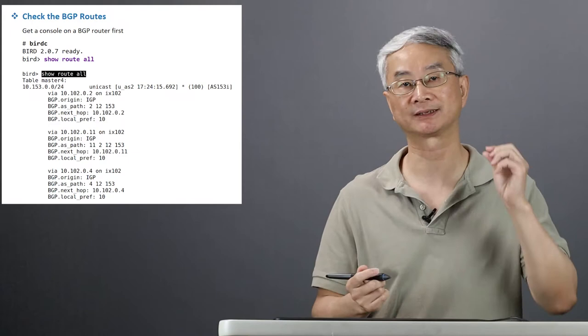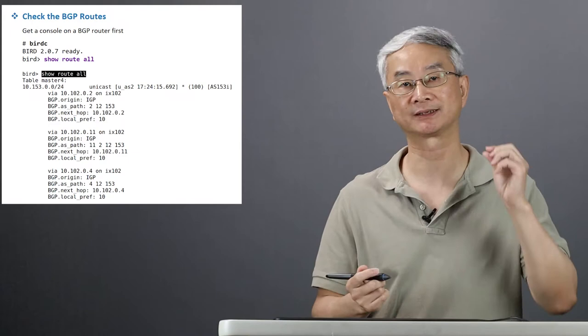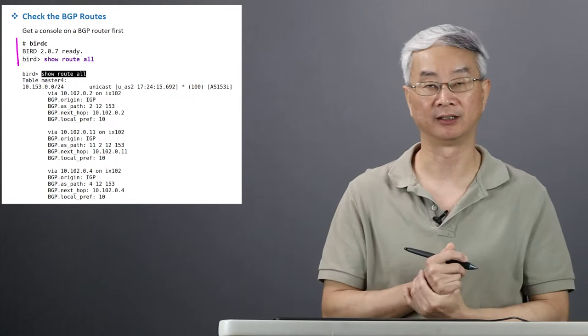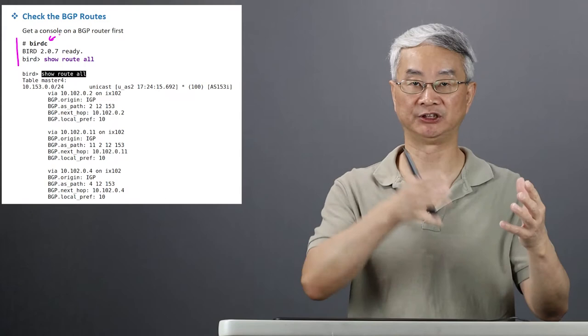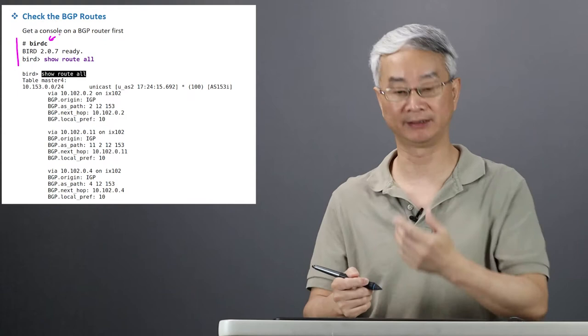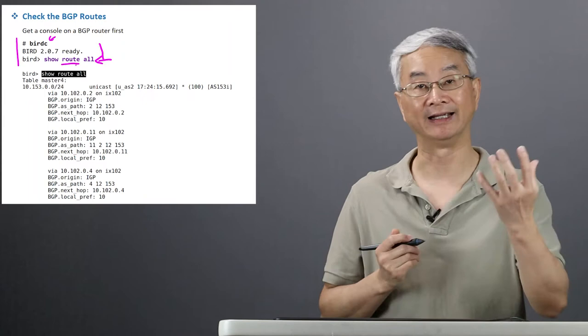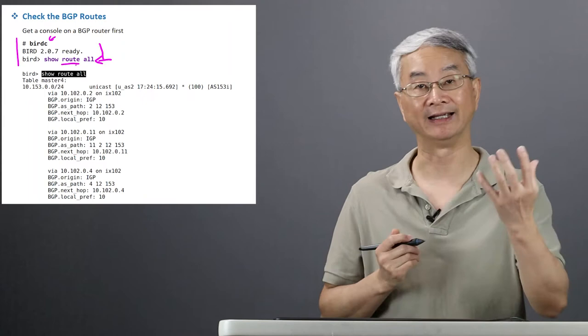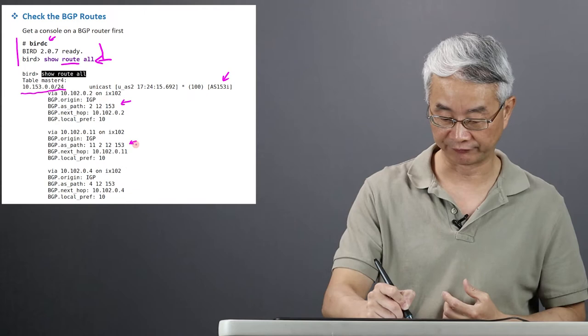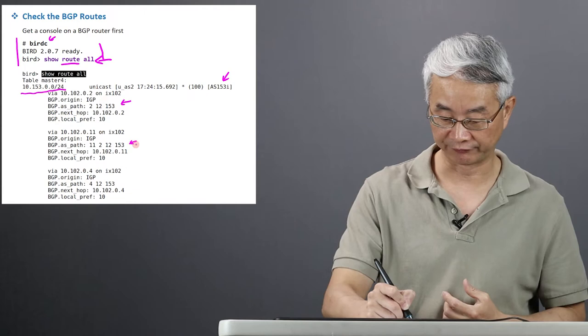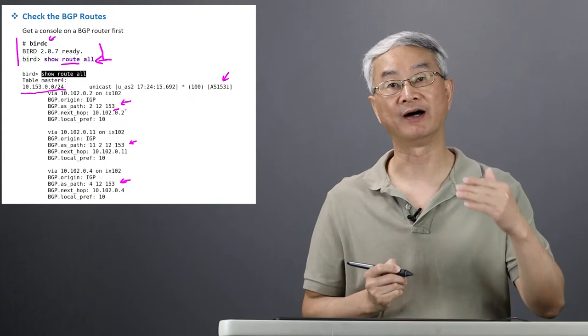If you want to learn how BGP works, this is one place you can dive into — you can look at the BGP table. On this BGP router you can run BIRD C, which is the BIRD client program. The underlying BGP daemon is called BIRD, which is open-source BGP software. You can run the BIRD client, get into it, and run commands like showing all routes. Here I'm showing all the routes I received from my neighbors. Each route starts with an IP prefix, and originally it comes from AS153. I got three announcements from neighbors, and you can see the AS path — I can reach AS153 through AS2, then AS12, then AS153.